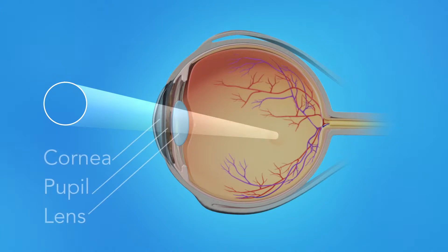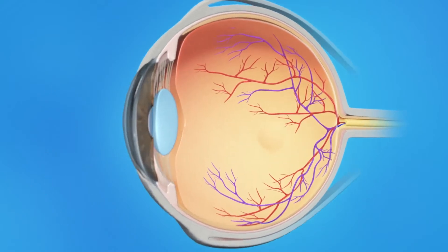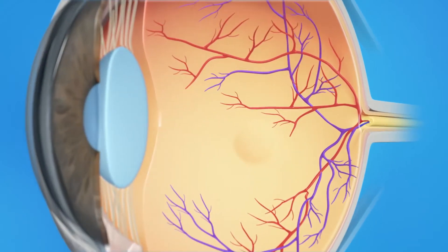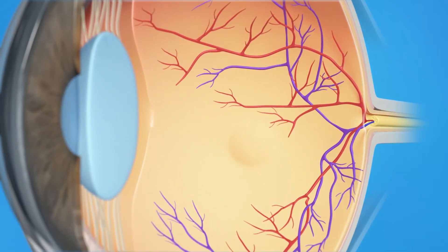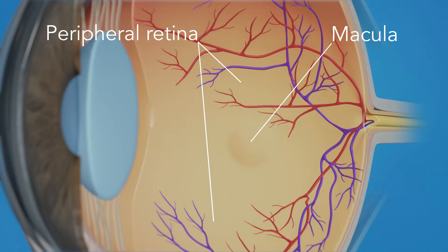Light rays enter the eye through the cornea, pupil, and lens. These light rays are focused on the retina, the light-sensitive tissue lining the back of the eye. The retina has two areas: the peripheral retina, which gives us our side or wide-angle vision, and the macula, the small area at the center of the retina. The macula gives us our pinpoint vision, allowing us to see detail clearly.